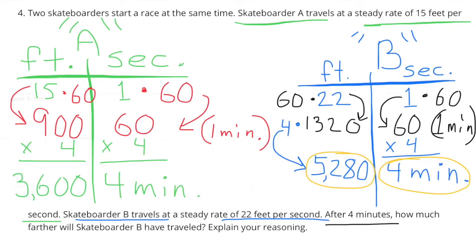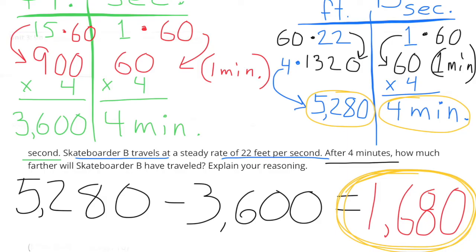Multiply 60 seconds times four and you have four minutes. One minute times four equals four minutes. Multiply the other side by four: 900 times four equals 3600 feet for Skateboarder A. Skateboarder B: 60 seconds times four is four minutes; 1320 times four is 5280 feet. 5280 minus 3600 is 1680 feet. So after four minutes, Skateboarder B will be 1680 feet ahead of Skateboarder A.